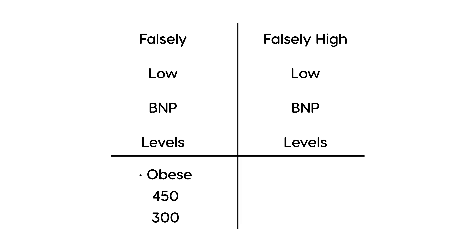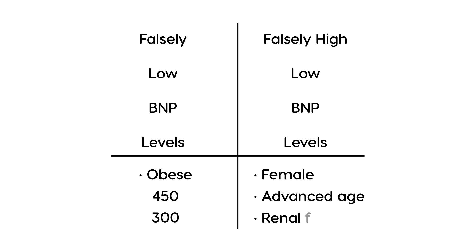In contrast, certain patients can have a falsely high BNP value. There are three scenarios: female patients, patients advanced in age, and patients with renal failure. In these patients, even if they do not have CHF, their BNP value can be higher than 100 — perhaps 200 or more — even without CHF. That is what is meant by falsely high BNP values.